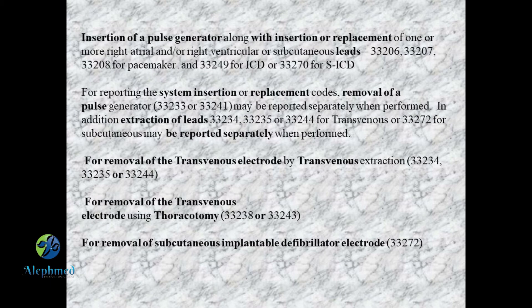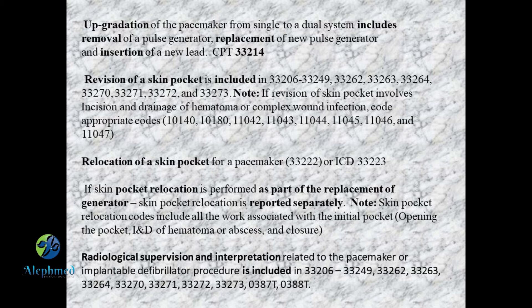In addition to thoracotomy or endoscopic epicardial lead placement, we assign 33202 or 33203 codes. Upgradation of the pacemaker from a single to a dual system involves removal of a pulse generator, replacement of a pulse generator, and insertion of a new code — meaning battery changes, removal, replacement, and insertion of an additional lead. The CPT for upgrading to a dual system is 33214.